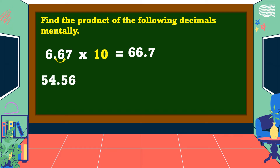Another example: fifty-four and fifty-six-hundredths times one-hundred. In multiplying decimals by one-hundred, move the decimal point two decimal places going to the right. So the answer is equal to five-thousand-four-hundred-fifty-six.